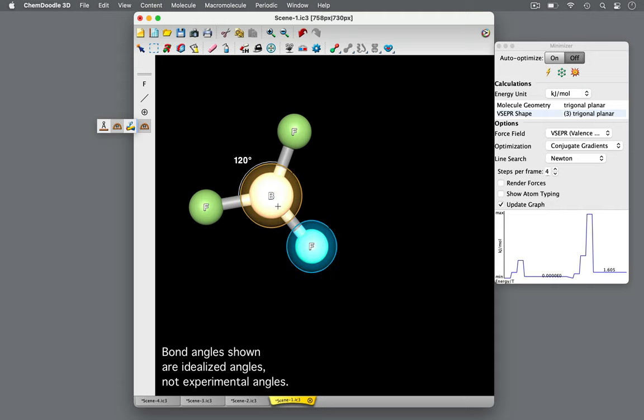The bond angle here is 120 degrees. In a trigonal planar geometry, the valence electrons are equidistant from each other, so all bond angles are 120 degrees.